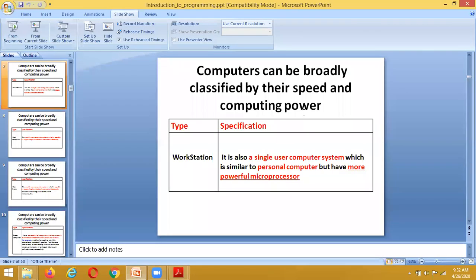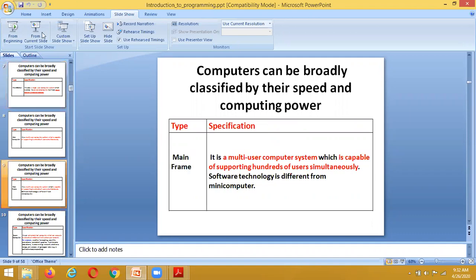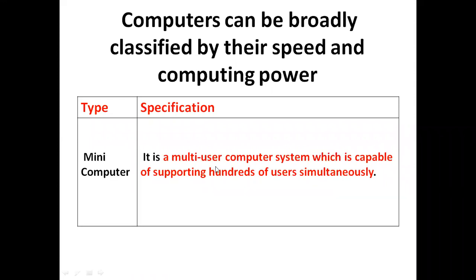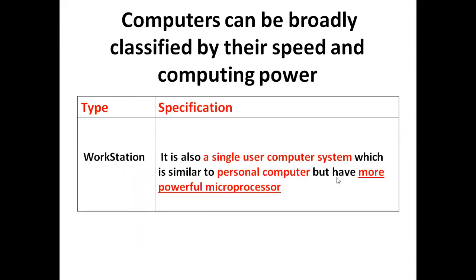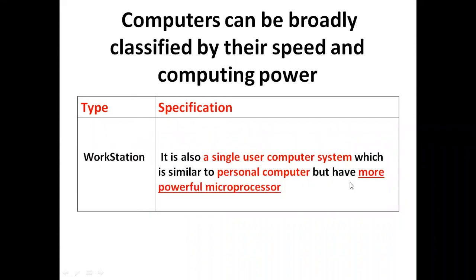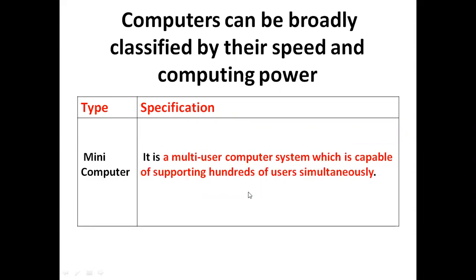We also indicate different computer types as workstation or mainframe. A workstation is used in software companies with a more powerful microprocessor, whereas a personal computer is used for simple, general applications. Mini computers are multi-user computing systems capable of supporting hundreds of users simultaneously. Nowadays, we use some mini computers such as smartphones.